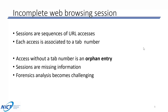When the collection process is incomplete, you end up with incomplete web browsing sessions. In this work, we define web browsing sessions as sequences of URL accesses—the user accesses one URL after another. Each access is tied to a tab number. If an entry in your records is missing the tab number, you don't know which browsing session it belongs to. In the paper we call that an 'orphan entry.' One consequence is that you will miss security incidents because you cannot fully reconstruct the browsing session.